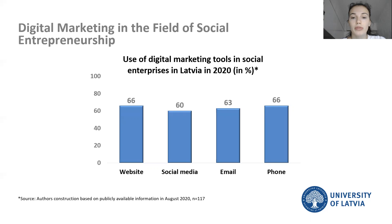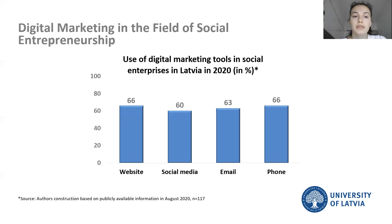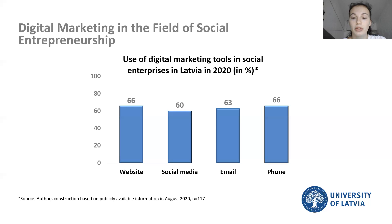The parameters of email and phone availability correspond in general with the website and social media parameters. In general, this information is very important when someone needs to contact the company directly. If there is no email or phone number, it means that the company cannot be reached by their audience.